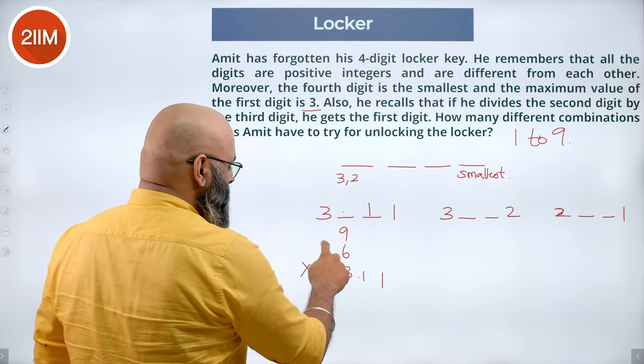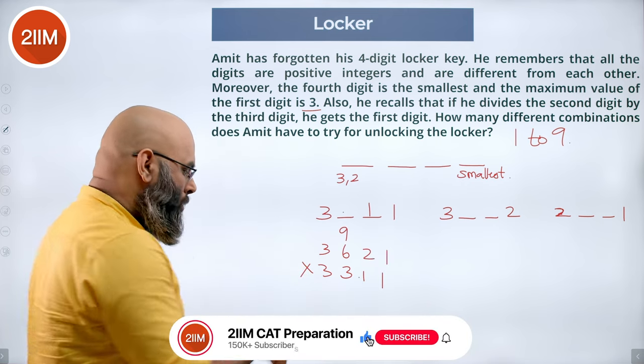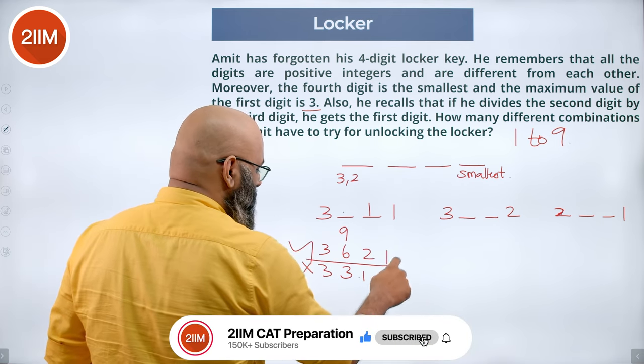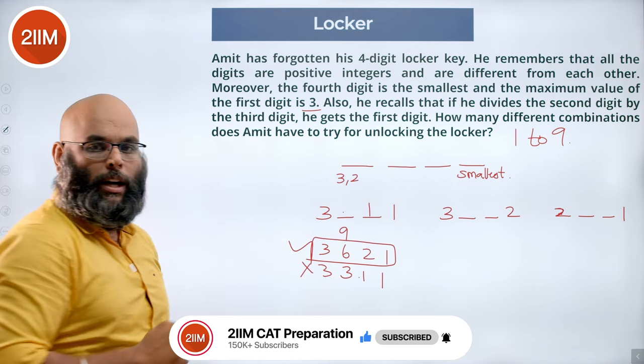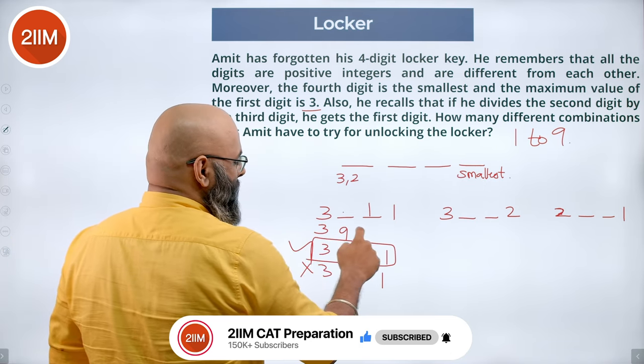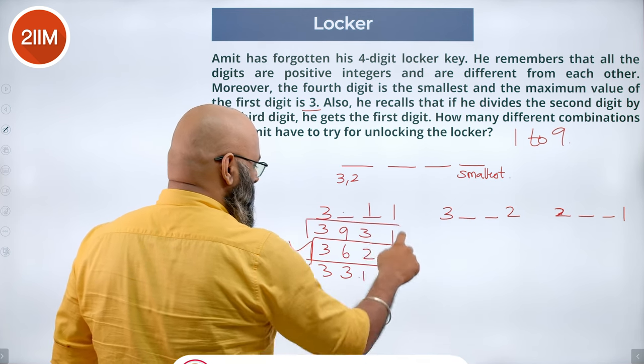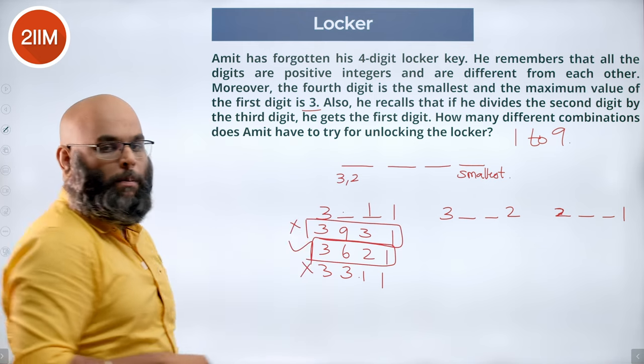If this has to be 6, this has to be 3: 6 2 1. Now this holds good because all of them are different and we are satisfying the condition. Now if it has to be 9, this becomes 3 3 3, 3 9 3 1. Again this is not a possibility because we are repeating our digits.